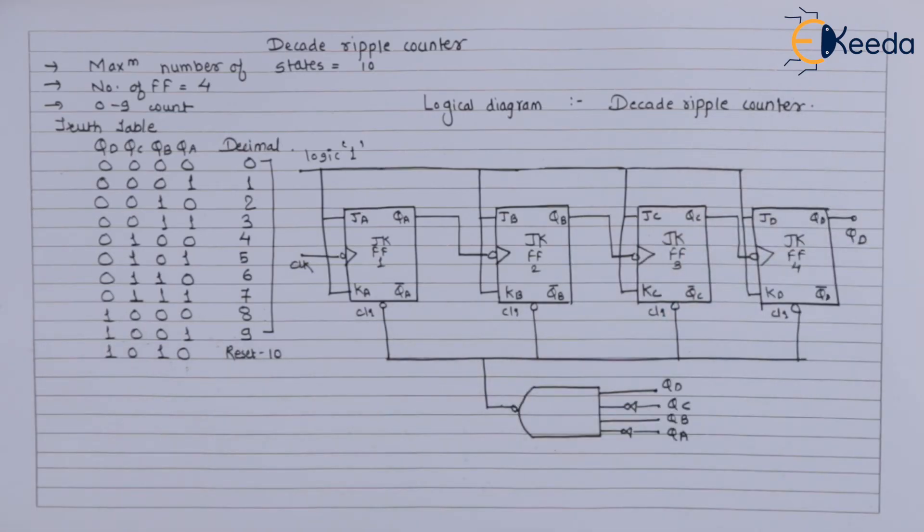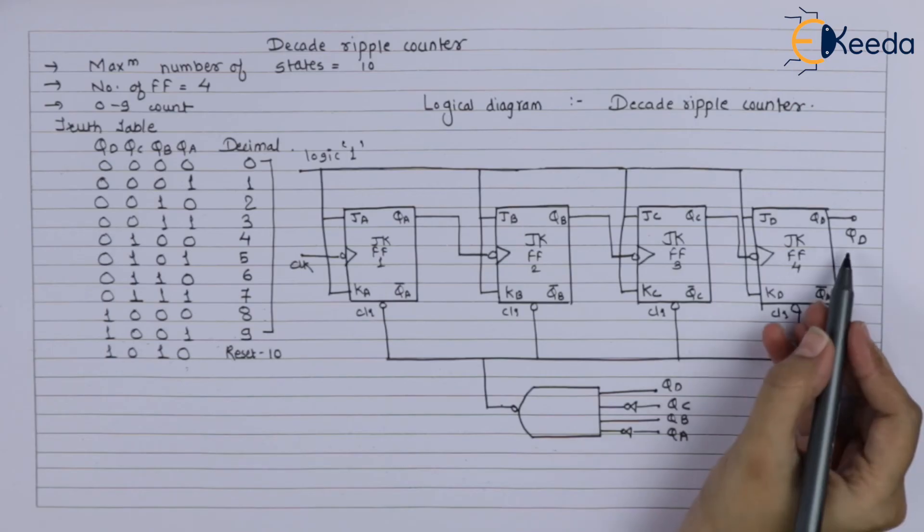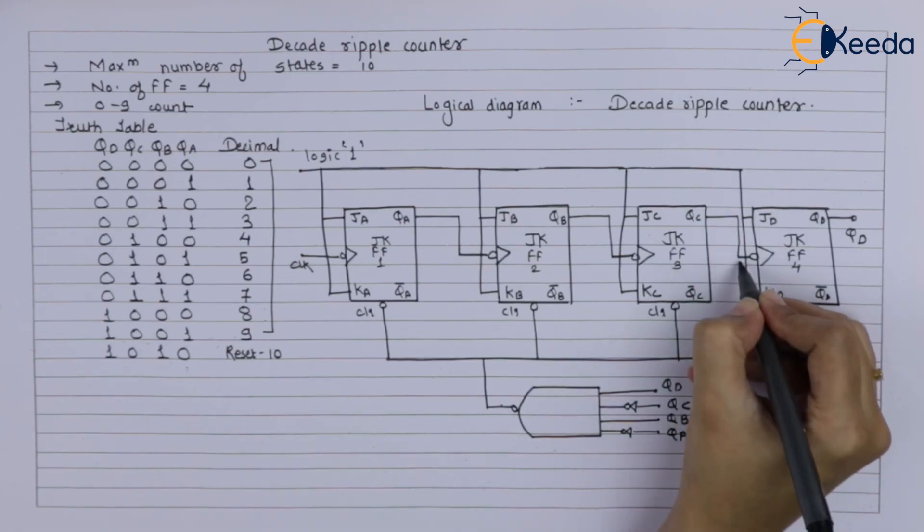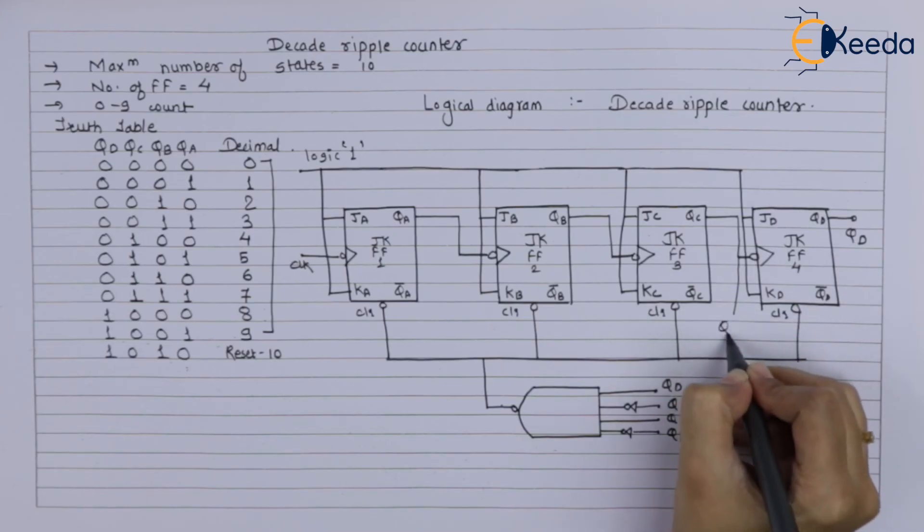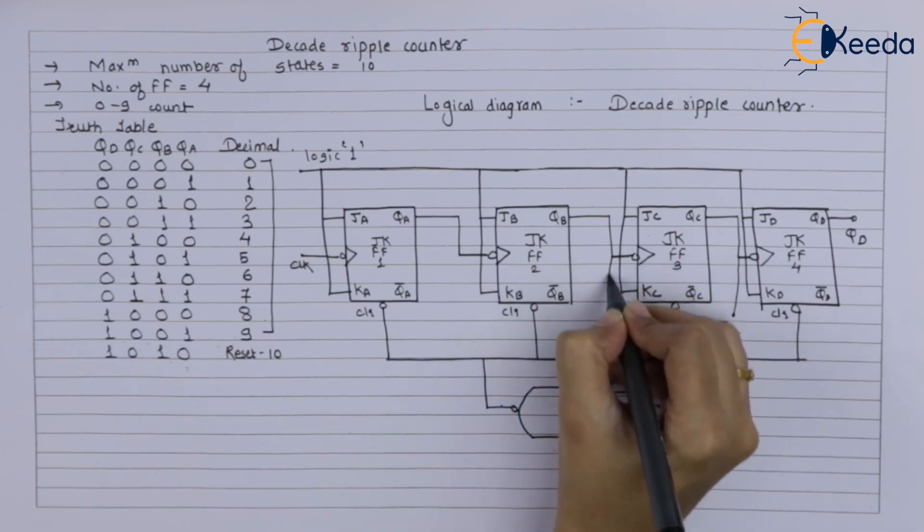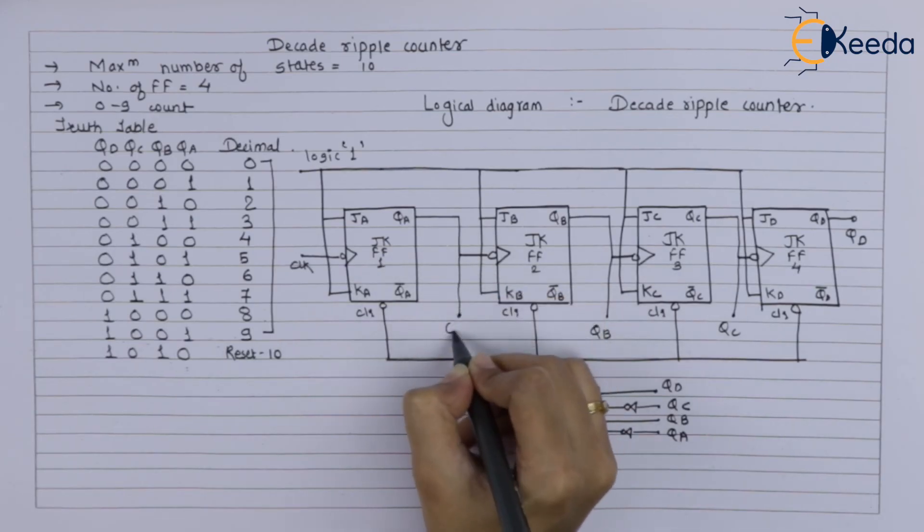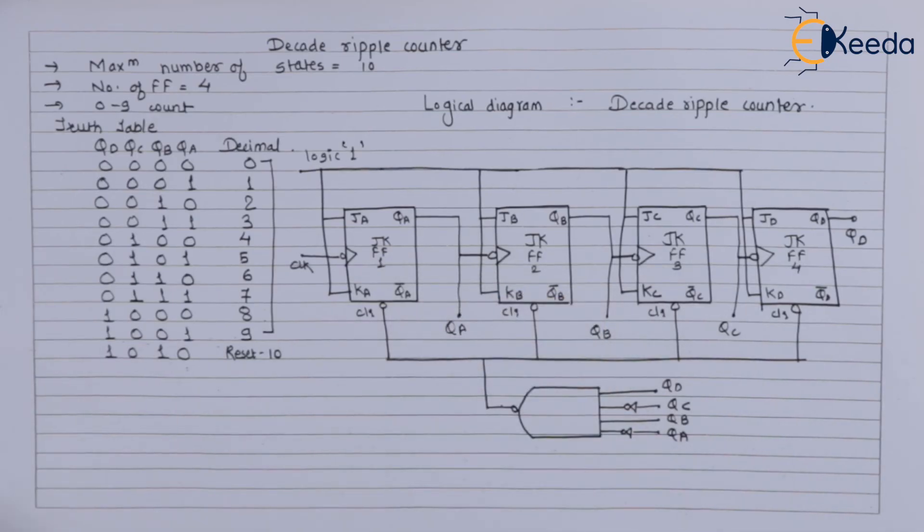Consisting of 4 number of flip flops having outputs QD, QC. This is your output QC. This is your output QB, and this becomes your output QA. And with the use of the clear terminals and using the NAND gate, you have to achieve the